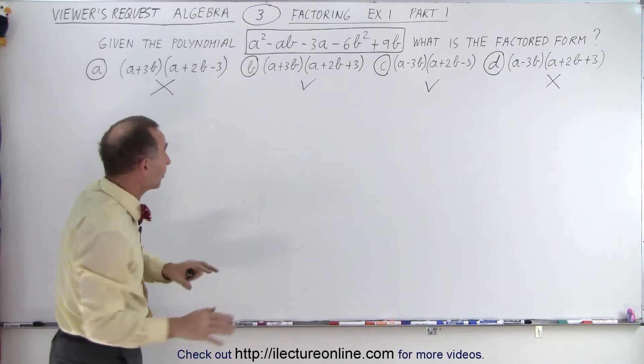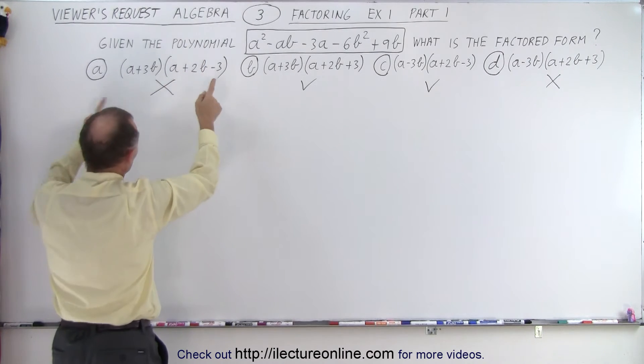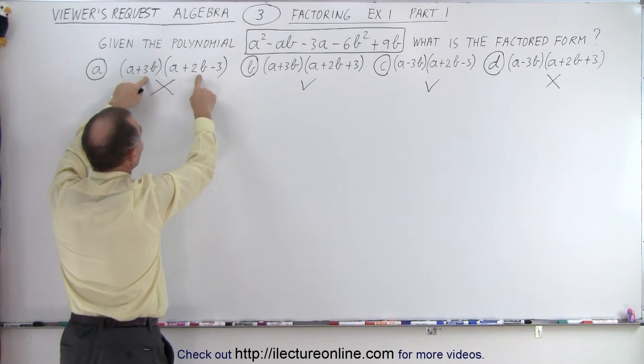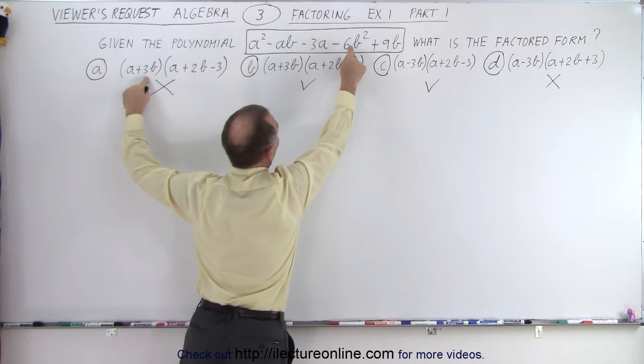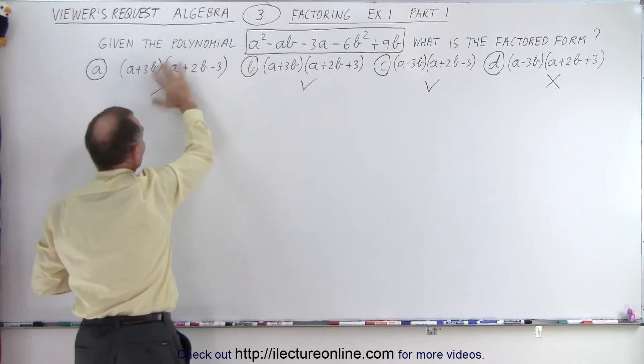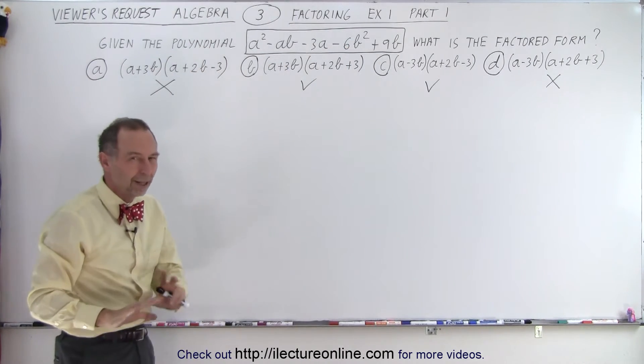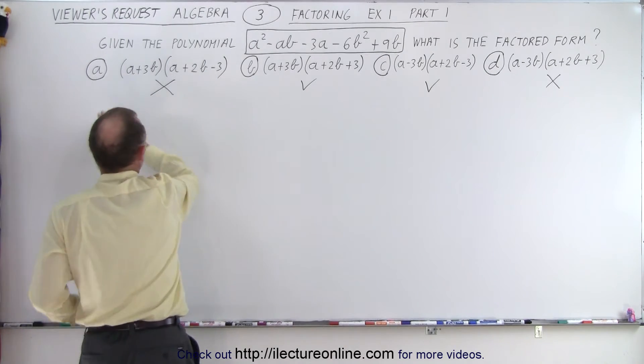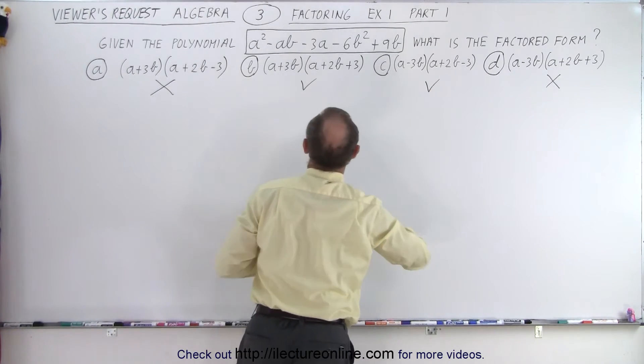Now of course I shouldn't have to look at this one because I've already eliminated that one, but just to show that this gives me a positive 6b squared and I have a negative 6b squared, so it can also not be that one for that reason as well. But we didn't have to look at that one because we've already eliminated it. We just need to look at these two right here.